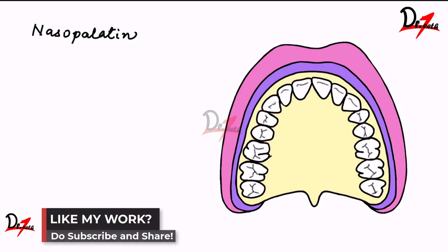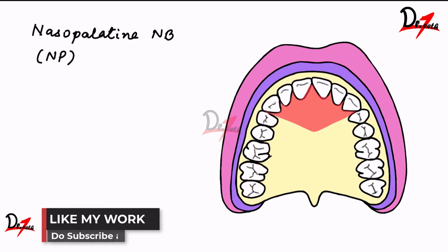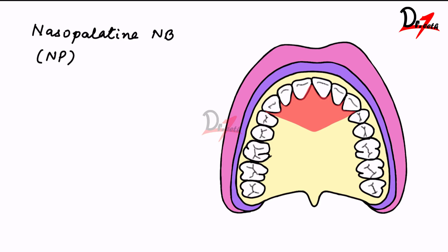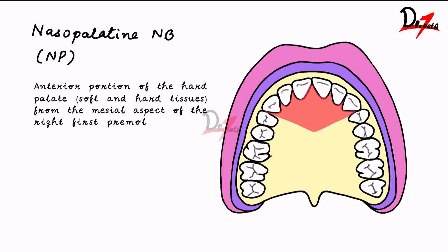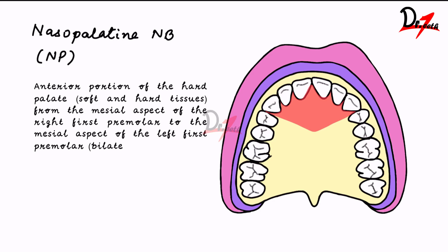Then we have the nasopalatine nerve block, or NP. It anesthetizes the anterior portion of the hard palate from the mesial aspect of the right first premolar to the mesial aspect of the left first premolar, bilaterally. So it covers the anterior hard palate soft tissues bilaterally. For example, if you have to extract a canine, you would give the nasopalatine nerve block and also the infraorbital nerve block.